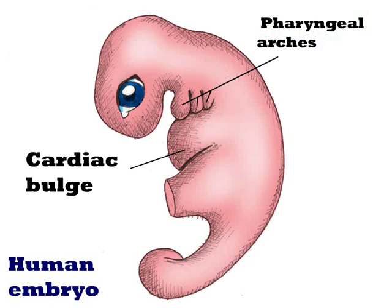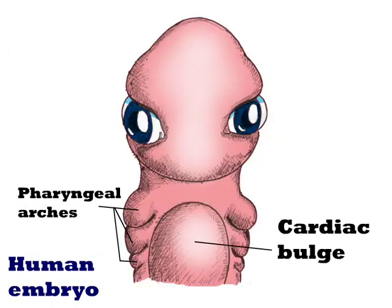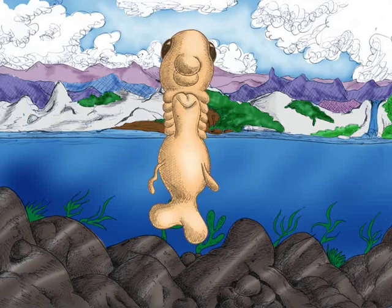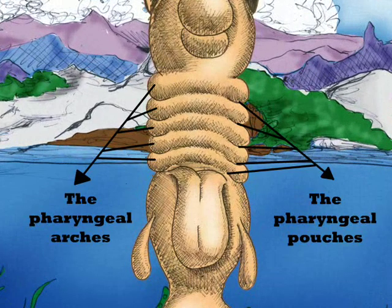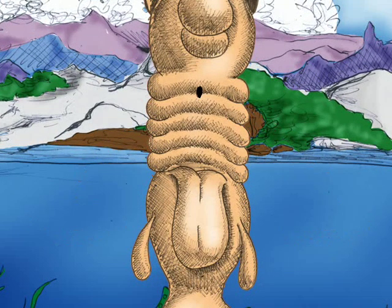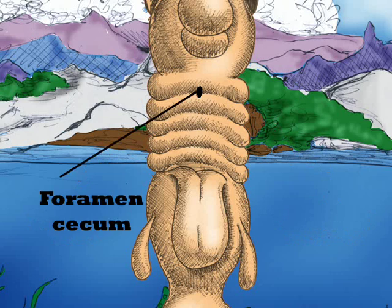Notice the cardiac bulge. This is a front view of the human embryo also. Now the cardiac bulge is removed to show the pharyngeal arches and pouches. Between the first and the second arches, which forms the tongue, the pharyngeal cecum is found.